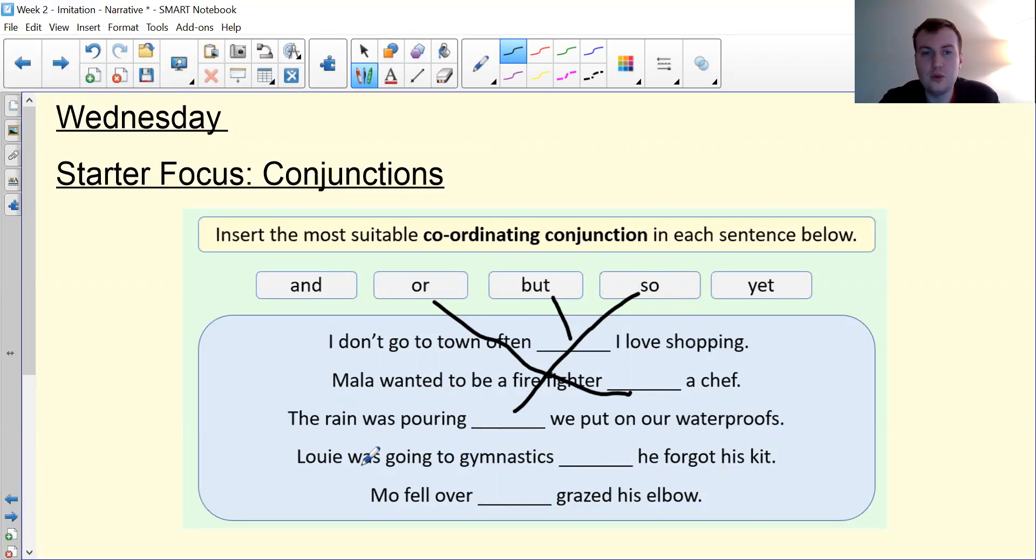Louis was going to gymnastics. He forgot his kit. So here you could have yet. Yet and but are quite interchangeable. So you could have had yet for the first one or for this one. Louis was going to gymnastics, yet he forgot his kit. And finally, Mo fell over and grazed his elbow. So well done if you got those.